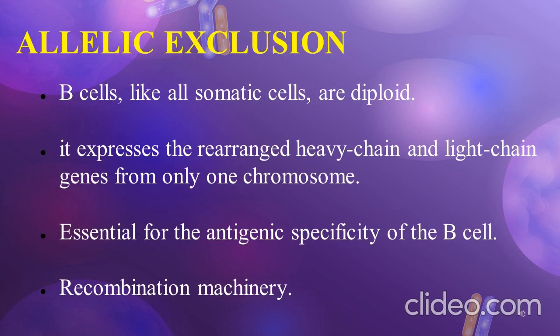I would like to conclude my lecture by discussing a special phenomenon associated with molecular diversity: allelic exclusion. B cells, like all somatic cells, are diploid and contain both maternal and paternal chromosomes. Even though a B cell is diploid, it expresses the rearranged heavy chain genes from only one chromosome and the rearranged light chain genes from only one chromosome. This process is called allelic exclusion, which ensures that functional B cells never contain more than one V-D-J gene from the heavy chain and one V-J gene from the light chain.